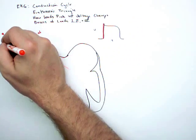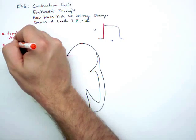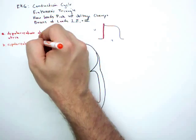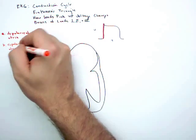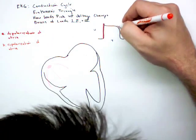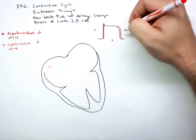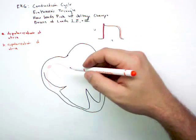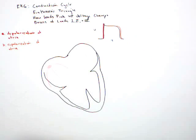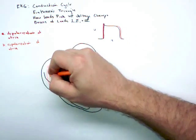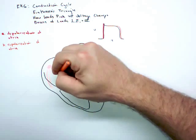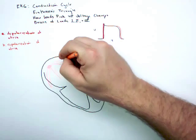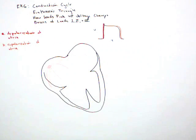Next up is repolarization of atria. If we're picking up voltage changes, then we're going to pick up this voltage change as well. It's going to be called repolarization, and we'll pick it up here. It shows up as it progresses through the atria, reversing the path of depolarization.